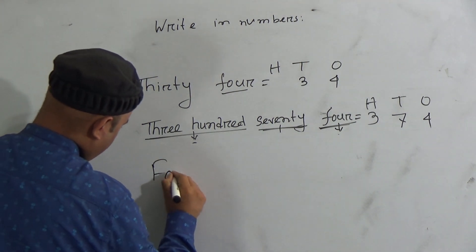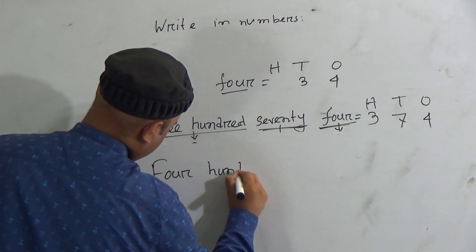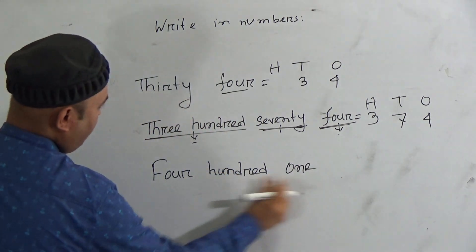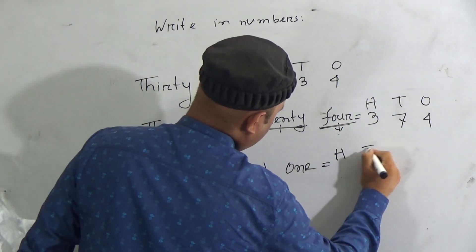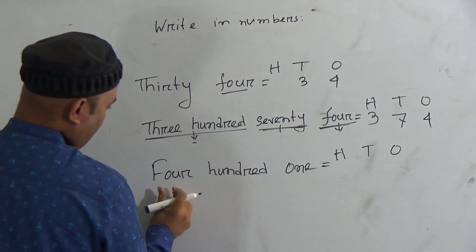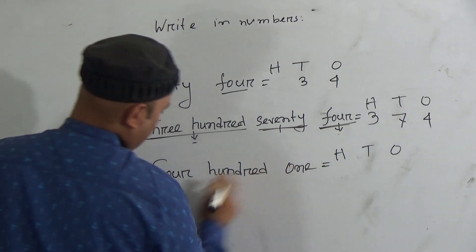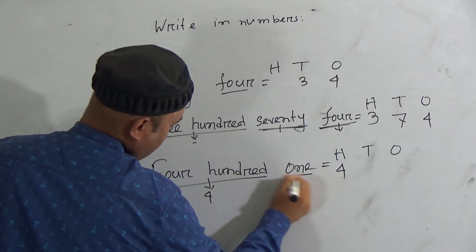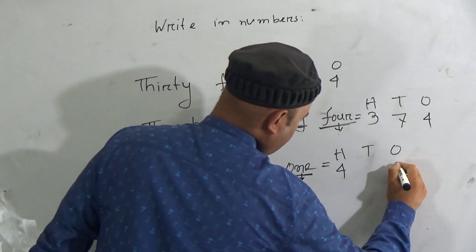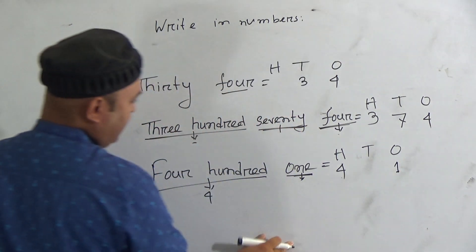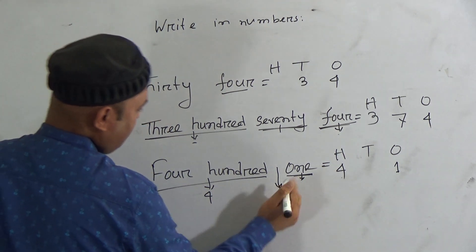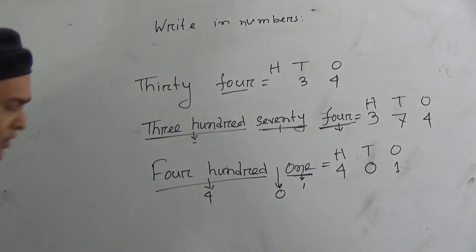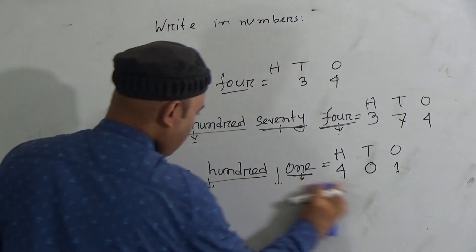If I write 401, that means you have to write hundred, tens, and ones place. How many hundreds are here? Here is 400, so you have to write 4 in hundred place. The last digit is 1, so 1 is in ones place. There is no digit in the tens place, so you have to use 0 in tens place. So 401.